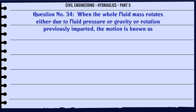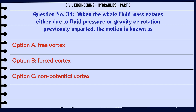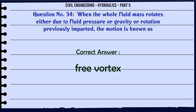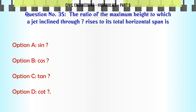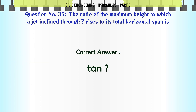When the whole fluid mass rotates either due to fluid pressure, gravity, or rotation previously imparted, the motion is known as: A. free vortex, B. forced vortex, C. non-potential vortex, D. rotational vortex. The correct answer is free vortex.